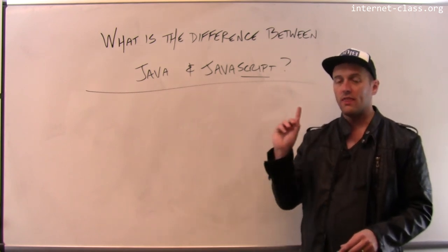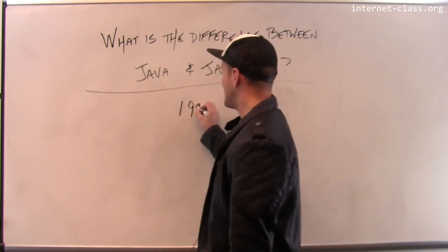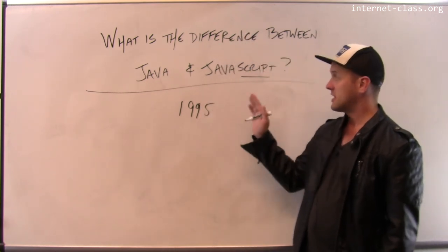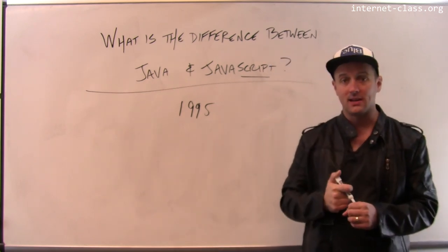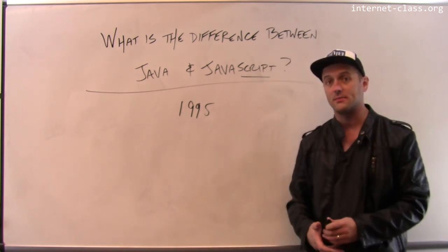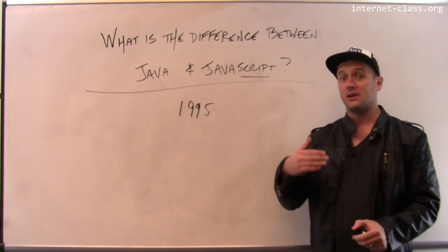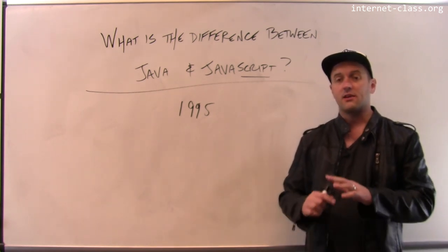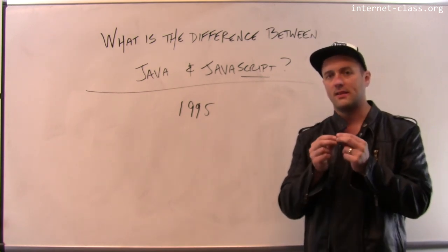There is one thing that is similar about Java and JavaScript, which is that they were both released in 1995. Other than that, the difference between Java and JavaScript is everything — they're completely different, distinct programming languages. Java has a really strong and arguably rigid type system. JavaScript has a prototype-based type system that's a bit more flexible. Java is compiled into bytecode which is run; JavaScript is interpreted. So these are entirely dissimilar, distinct programming languages, and the only thing that might confuse you is the name.